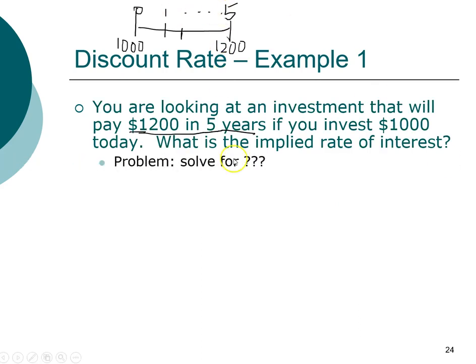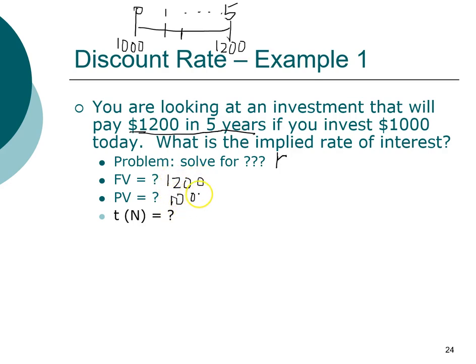We are solving for the discount rate, and we have three of the four factors. To solve for the discount rate, we need the future value, the present value, and the investment horizon. Did you put down twelve hundred dollars for future value, one thousand dollars for present value, and five years for the investment horizon? If so, congratulations — you're almost there.